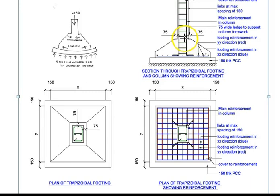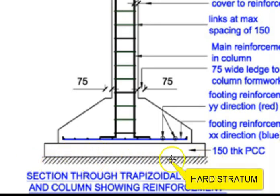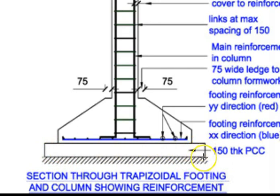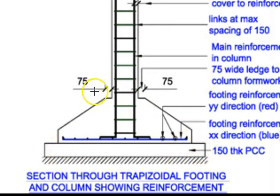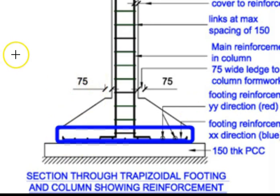Let us zoom into this part of the sketch. At the bottom you can see lines showing the hard strata on which the PCC bed has been constructed. The PCC bed is constructed to give a hard and level surface for casting the footing on top. The footing itself consists of two parts: the first part is the rectangular portion, and the upper part is the trapezoidal part of the footing.